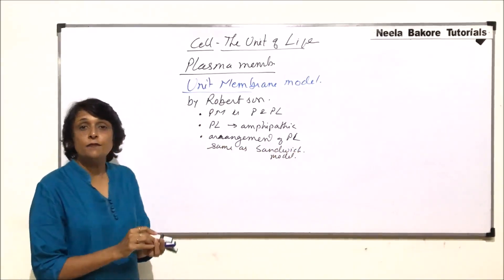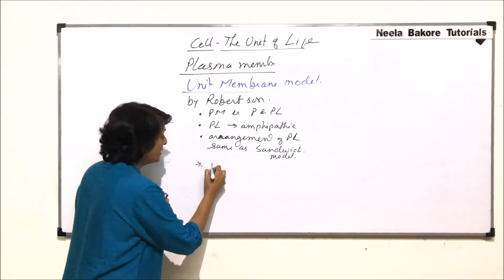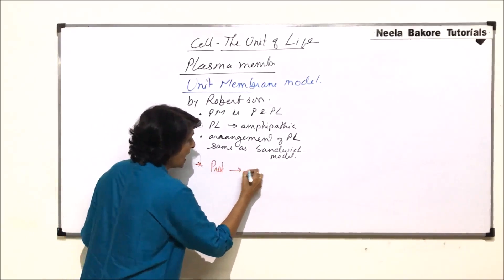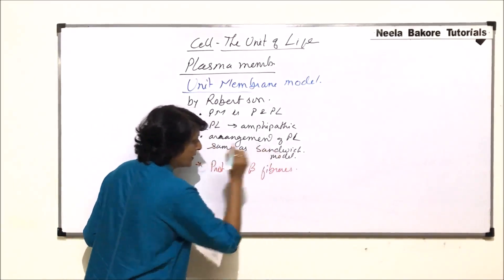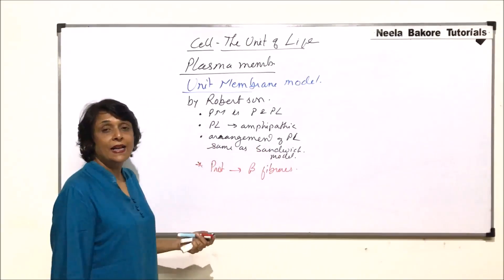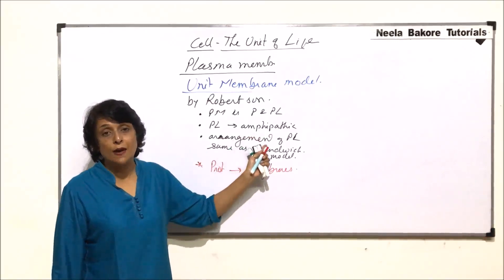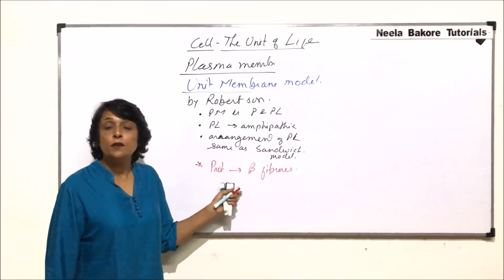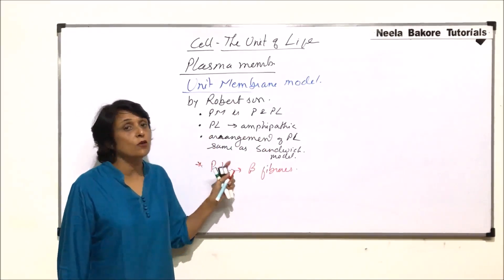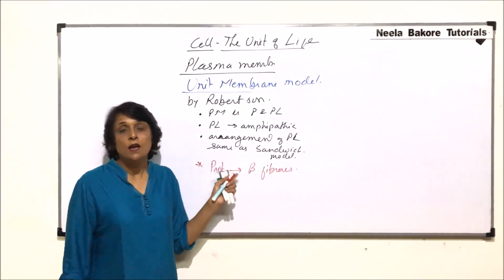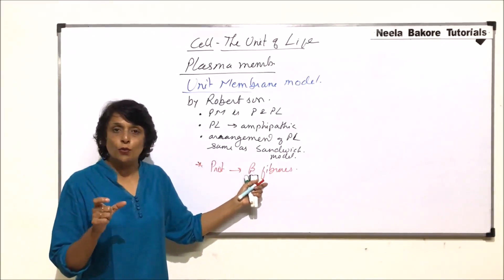The only different point given by Robertson was that the proteins are beta fibrous proteins. In the Danielli-Davson model, proteins are alpha globular. But here, the difference was that Robertson said the proteins are not globular — they are fibrous. Globular proteins are spherical, while fibrous proteins are thread-like proteins.